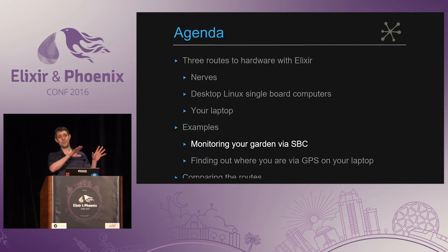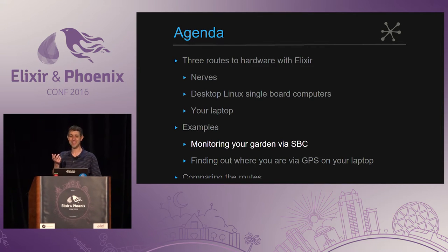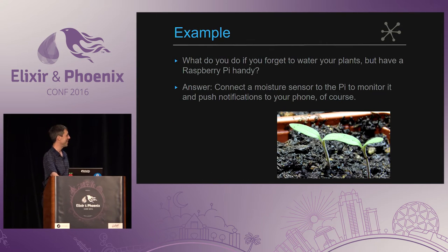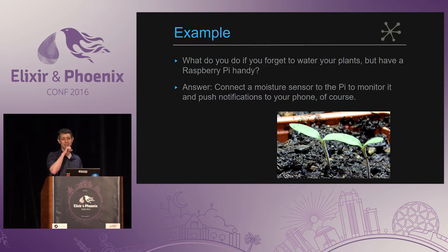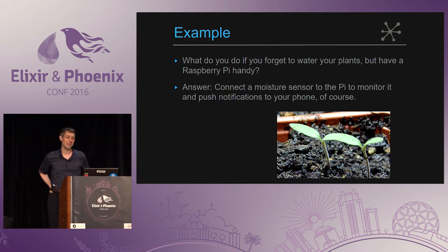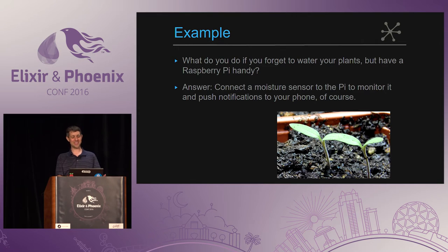Nerves and desktop Linux have similar capabilities, so I wanted to cover a particular application that's come up on the Nerves support list: monitoring your garden. People apparently can't remember to water their plants. You have a Raspberry Pi and want to connect a moisture sensor to monitor soil so you know when to water. Nothing super complicated, but when you get into the details it turns out to be more interesting than you'd think.